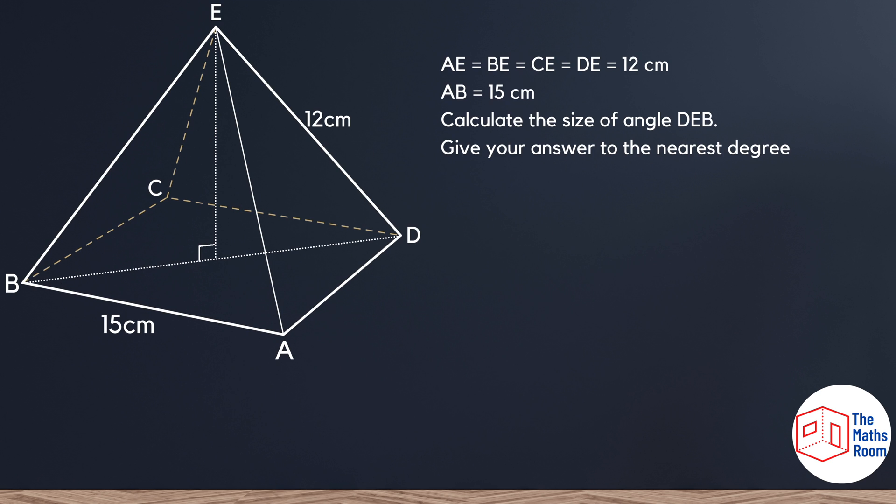First off, always highlight what's important - what they have given you. We know that these lengths AE, BE, CE, and DE are all 12 centimeters. We're also told AB is 15 centimeters, and we need to calculate the angle DEB.